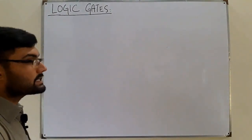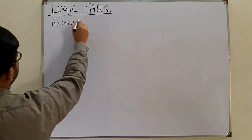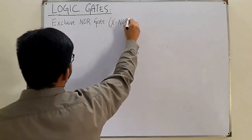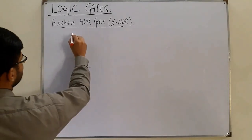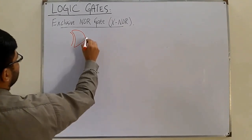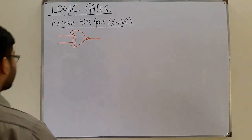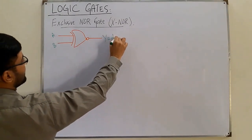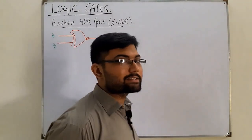Now the exclusive NOR gate — the last gate. In short it is called the XNOR gate. The symbol is like the exclusive OR gate but with a bubble added at the output, indicating inversion. It is a multi-input gate. With inputs A and B, the output Y = A XNOR B. The encircled dot represents the XNOR operation.